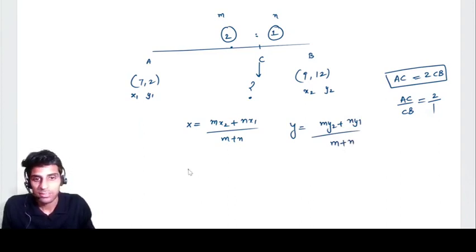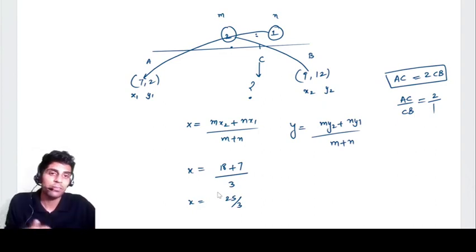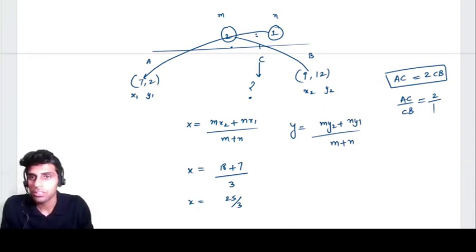So it means 2 into 9, so 2 multiplied by 9 which is 18, 1 multiplied by 7 which is 7, divided by 2 plus 1 which is 3. So x is equal to 25 by 3. If you want to convert it into decimal you can, otherwise you can leave the answer here also.